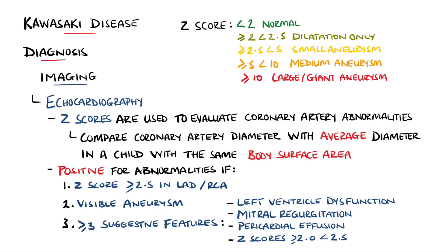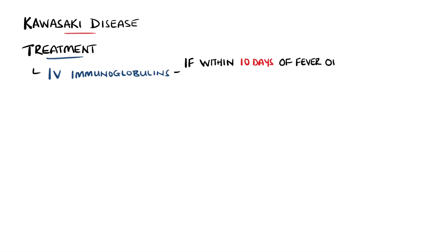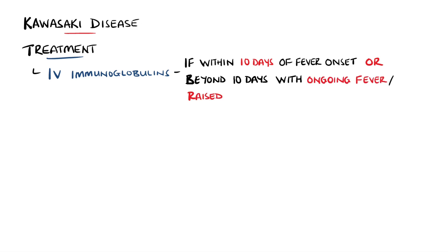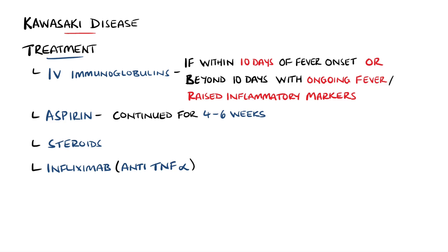This Z-score classification is important because it also has an effect on the treatment. The mainstay of treatment is the administration of intravenous immunoglobulins, which is indicated if the patient is still within 10 days of fever onset, or in cases where they are beyond 10 days of fever but have risk factors such as an ongoing fever or raised inflammatory markers. Aspirin is also often used in conjunction with the IV immunoglobulins. This is one of the few examples where aspirin is used in children due to the link with Reye's syndrome. In patients not responding to intravenous immunoglobulins, steroids or anti-TNF-alpha agents like infliximab may be used.